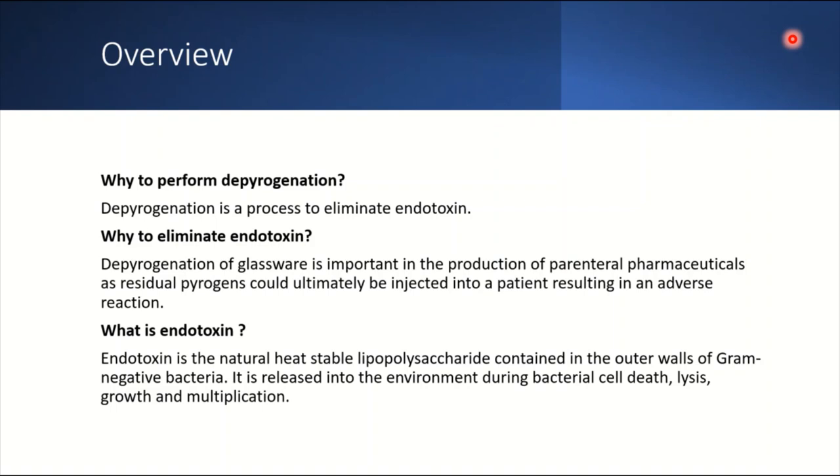Endotoxin is the natural heat stable lipopolysaccharide contained in the outer wall of gram-negative bacteria. It is released into the environment during bacterial cell death, lysis, growth, or multiplication. Endotoxin is the lipopolysaccharide part of gram-negative bacteria which can stay in your container or where the product is going to be held.